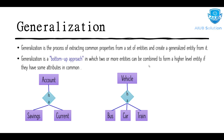Generalization is a bottom-up approach in which two or more entities can be combined to form a higher-level entity if they have some common attributes. This bottom-up approach is very important, especially for exam questions. For example, bus, car, and train — these three entities are all vehicles, so they can be combined into a single vehicle entity.